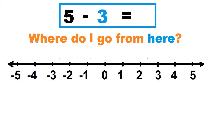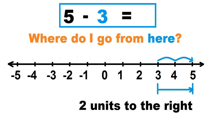Last example: 5 minus 3. Where do I go from 3? Count the number of units from 3 to 5. To the right is positive, to the left is negative. Let's count: 1, 2. That's 2 units to the right. So 5 minus 3 equals 2.